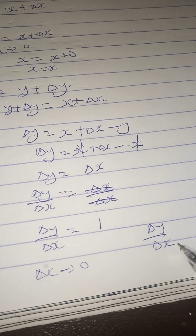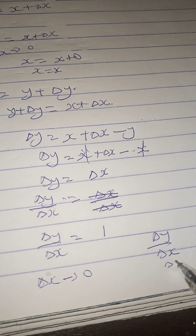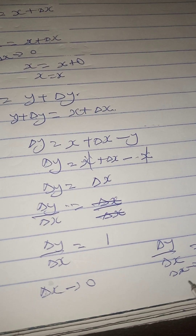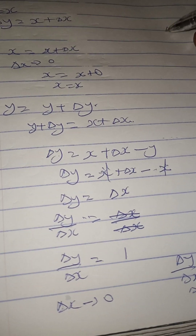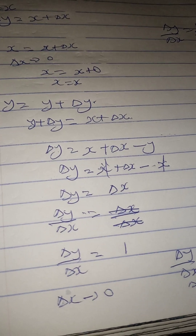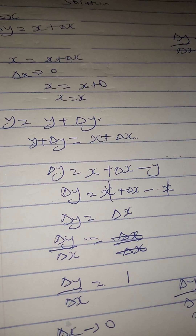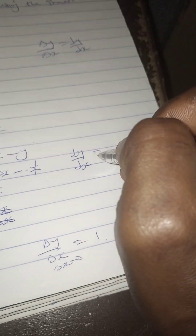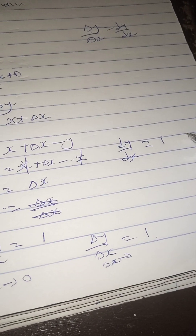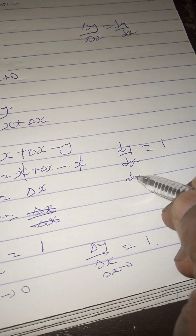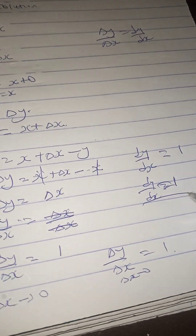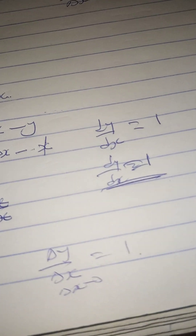So we have the limit as δx approaches zero of δy over δx equals 1. This gives us dy/dx. Since there is no δx remaining, we don't substitute any value, so dy/dx equals 1. That is our final answer.